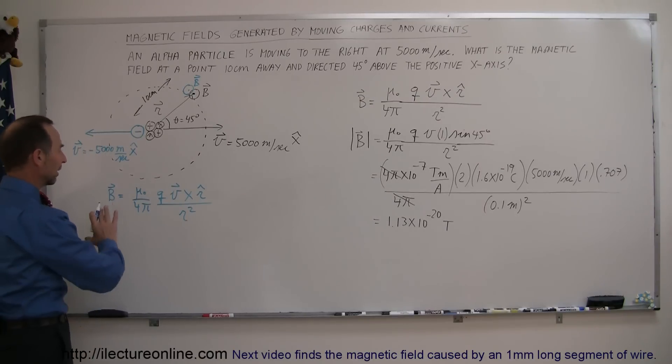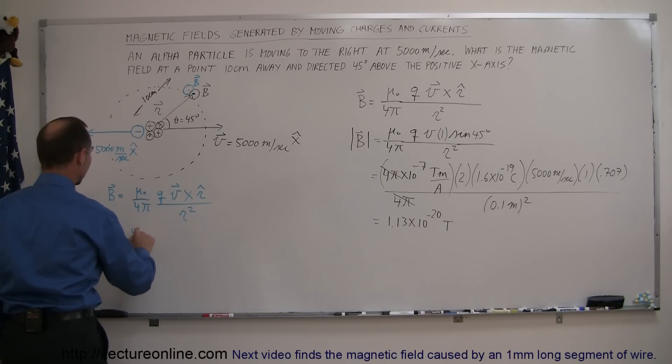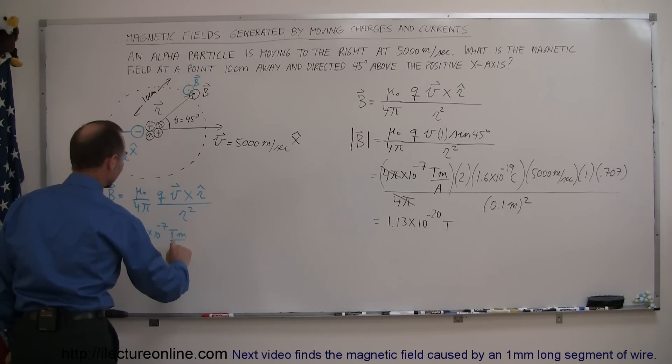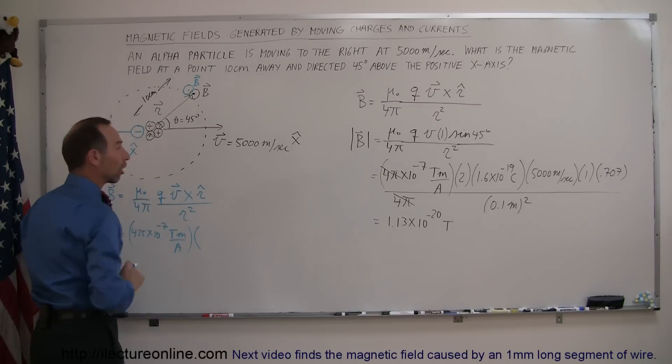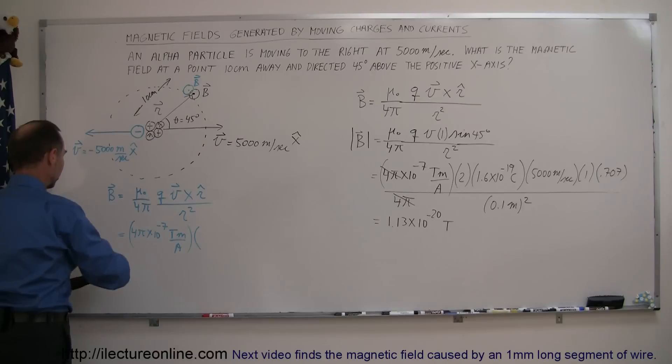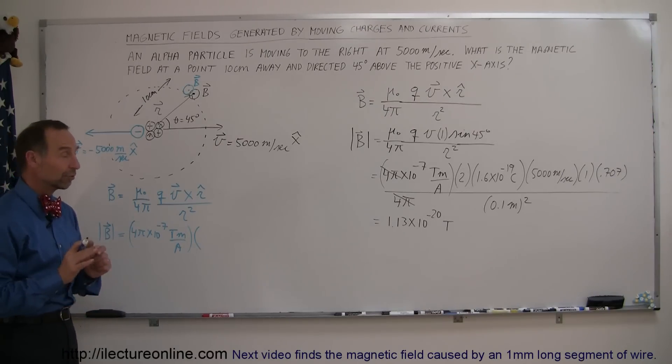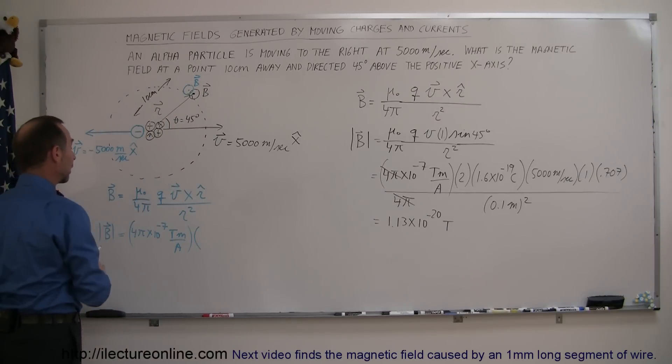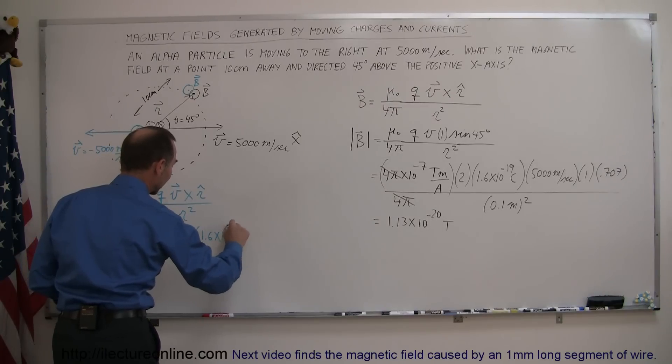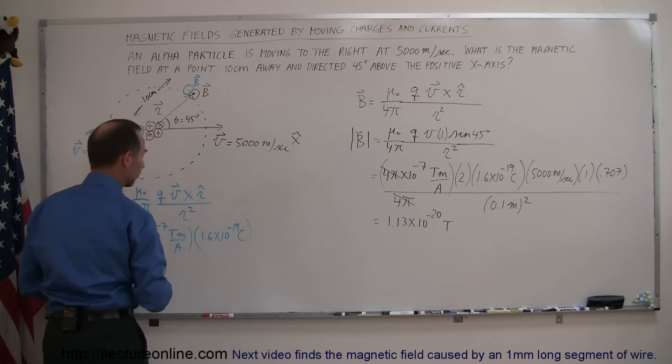So now you will notice that just about everything is the same as before, so this is equal to 4 pi times 10 to the minus 7 Tesla meters per amp multiplied times a single charge. Now you don't care if it's a positive or negative charge, because we are finding the magnitude, so we're simply finding the magnitude of that quantity, so let me indicate here that we're just simply finding the magnitude, and therefore we don't care about the sign.